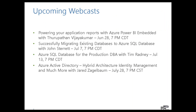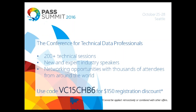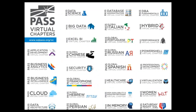We have upcoming webcasts over the next several weeks including Power BI content, Azure SQL Database with John Starrett, a presentation from Tim Radney on SQL Database for the production DBA, and Azure Active Directory for identity management. The PASS organization runs a summit every year — this year it's October 25th through 28th in Seattle. You can get a $150 discount using code vc15chb6.